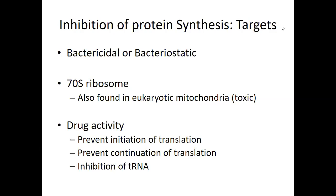The 70S ribosome is a great target because we don't have one with the exception of mitochondria, so the drug can't easily have toxic effects. You can interfere with translation — stop the initiation of translation so it can't even start — prevent the continuation of translation once it's started, or interfere with transfer RNA. Transfer RNA is what brings amino acids to the ribosome as you're assembling a polypeptide that will eventually become a protein.